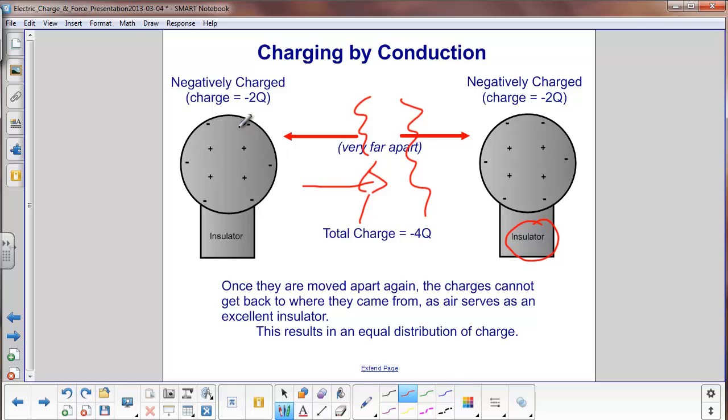So what we have now is, remember we had 6 negative charges on each one? So we have a negative 6q.